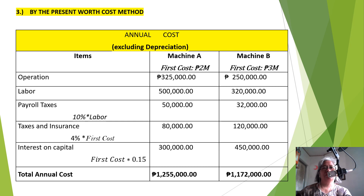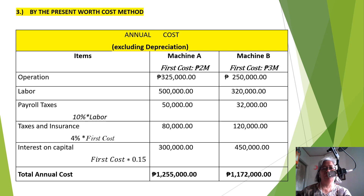The third method is the present worth cost method. We again compute the annual cost, but this time we exclude depreciation since we are working in present worth terms. Items considered are operational cost, labor cost, payroll taxes, interest on capital, and taxes and insurance. The total annual cost for machine A is $1,255,000 and for machine B is $1,172,000. The annual cost for A is greater than the annual cost of B.